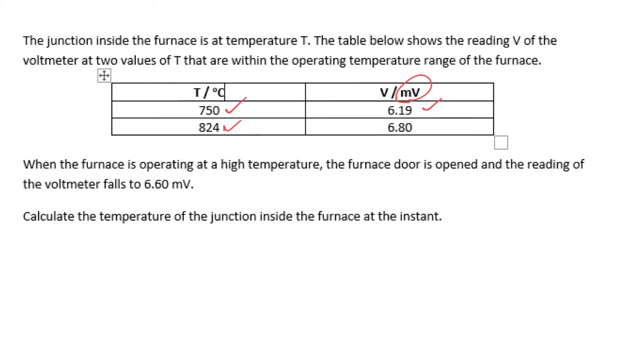When it's 824 degrees Celsius, it will give you a voltage of 6.80 millivolt. Now you may recall this formula: the unknown temperature θ, the physical quantity in this case x_θ minus x_0 at ice point, x_100 minus x_0, and the whole thing times 100.